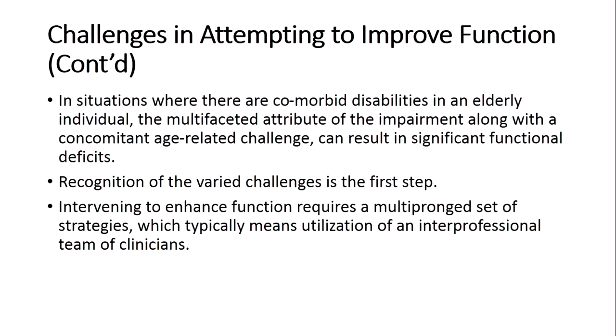In situations with comorbid disabilities in an elderly individual, the multifaceted impairments along with ongoing age-related challenges can result in significant functional deficits. Recognition of the various challenges is the first step. When a person has multiple types of disadvantage from both aging and disability, you must understand those challenges and then intervene using a multi-pronged set of strategies — typically an interprofessional team including a physician, occupational therapist, rehabilitation counselor, rehabilitation engineer, social worker, or case manager — all coming together to mitigate the negative impact.